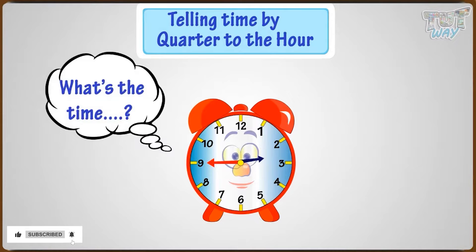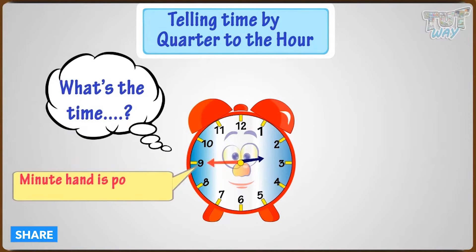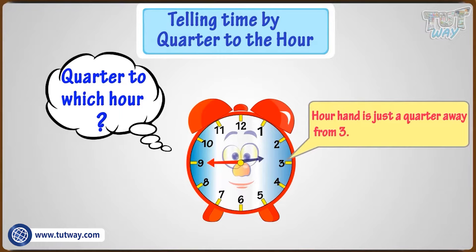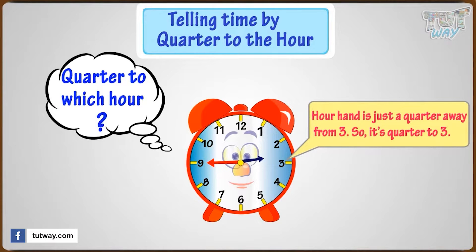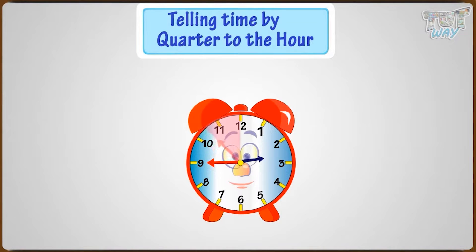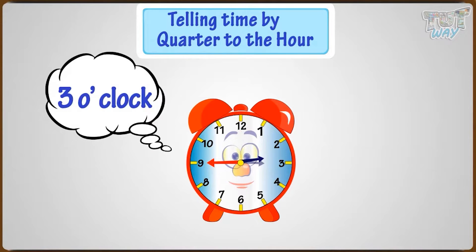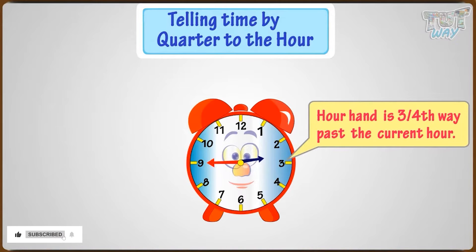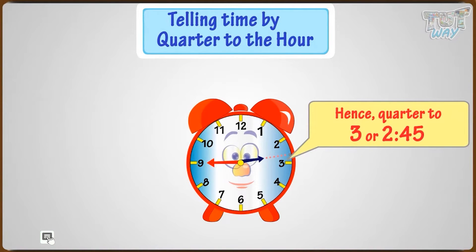What's the time in this analog clock? The minute hand is pointing at 9, so it's quarter to the hour. But quarter to which hour? The hour hand is just a quarter away from 3, so it's quarter to 3. It's called that because if the minute hand moves round one more quarter, it will be three o'clock. Also, the hour hand is pointing three-fourths of the way past the current hour — see the dotted line. Hence, quarter to three, or two forty-five.